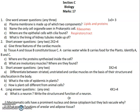Question 1d: what is the lining of kidney tubules made up of? The right answer is cuboidal epithelium. Cuboidal epithelium makes up the lining of the kidney tubules, and apart from this, it also forms the ducts of the salivary gland. Those are the right answers for questions 1a, 1b, 1c, and 1d.